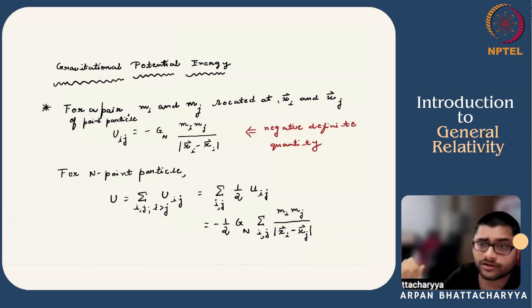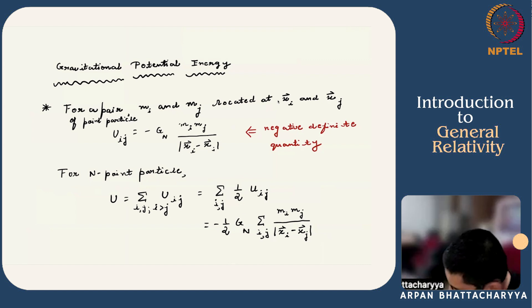For a pair of point particles with gravitational mass mi and mj located at points xi and xj, the gravitational potential energy is given by this. This is a negative definite quantity because this is an attractive force. We can generalize it for n point particles, which is basically you have to sum over all possible pairs, and i > j gives the restriction such that you do not overcount. If you want to remove this i > j restriction, you have to put a factor of half. For n particles, this expression generalizes.